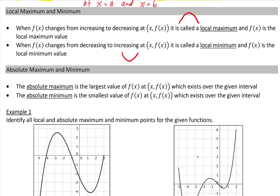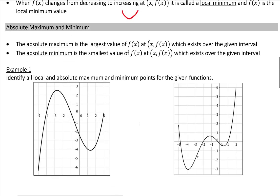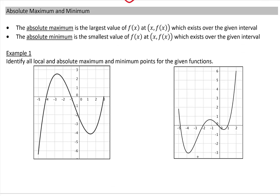We call these local maximum because they are the highest point within a given interval. The absolute maximum is the largest value of y or f(x) which exists over the given interval. The absolute minimum is the smallest value of y or f(x) which exists over the given interval.